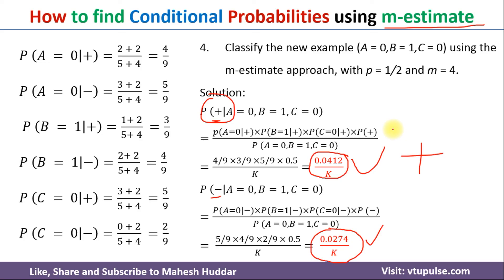In this video, I have discussed how to calculate the conditional probabilities with and without the M-estimate approach, and how to address the zero probability issue in the Naive Bayes classifier. I hope the concept is clear. If you like the video, do like and share with your friends. Press the subscribe button for more videos and the bell icon for regular updates. Thank you for watching.